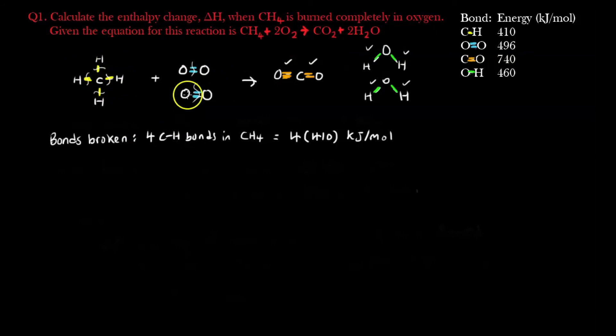Not just this, I have to break this as well, so there are how many? There are 2, 2 OO double bonds in oxygen O2. So this one sums up to be 2 times 496 kJ per mole. So we are done with the reactants, which are bond breaking.